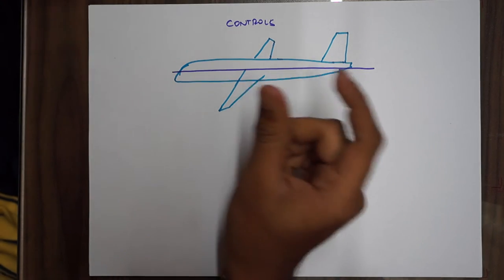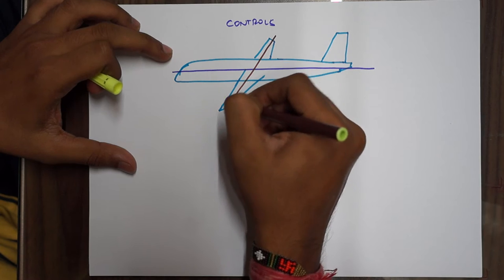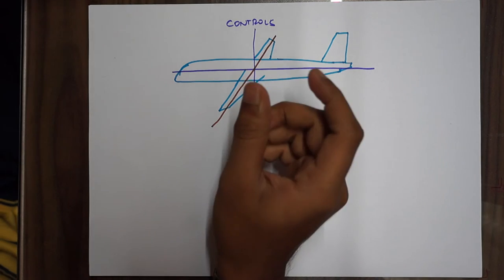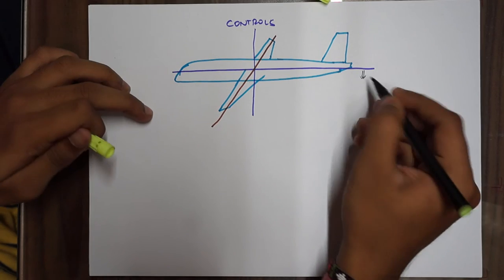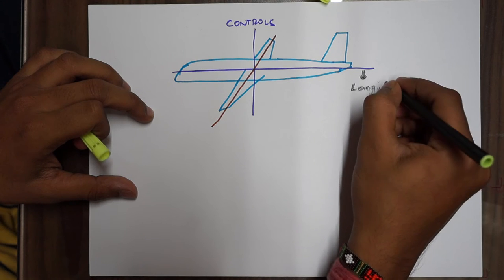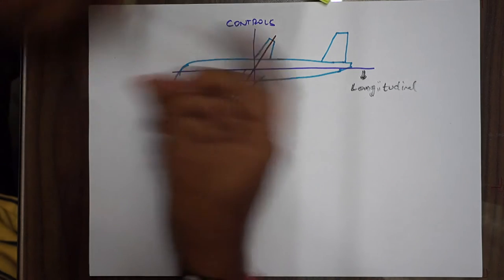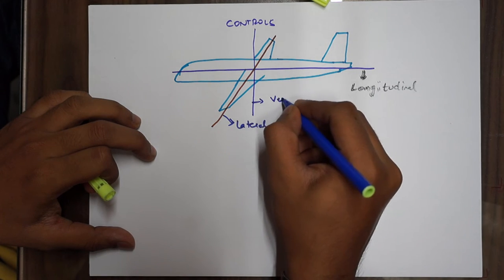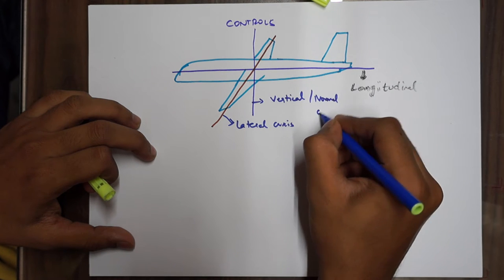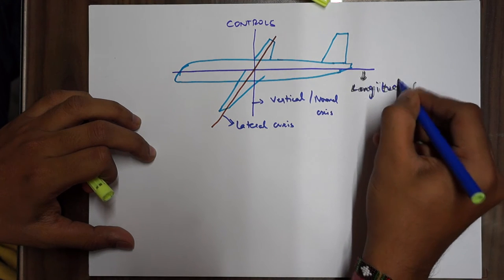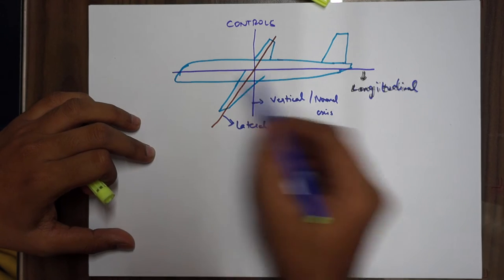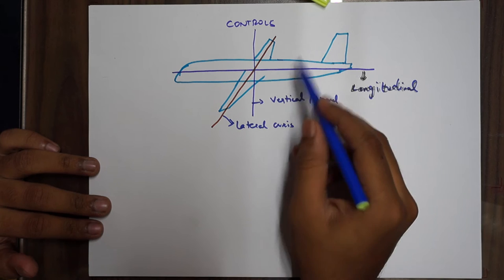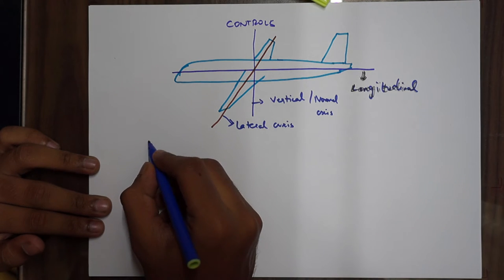We have an axis that goes through the wings and another axis that passes lengthwise. This is your longitudinal axis, this is your lateral axis, and this is your vertical or normal axis. The longitudinal axis runs through the length from the nose to the tail of the aircraft. Lateral is through the wings, and vertical is perpendicular to both the longitudinal and lateral axes. It's important to know movement.